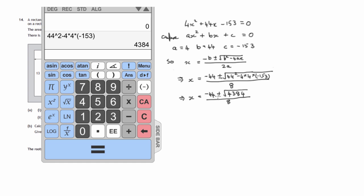Now, there are two possible values that come from this formula, because there's a plus or minus tucked in there. So, x is either negative 44 plus the square root of 4384 divided by 8, or, x is equal to negative 44 minus the square root of 4384 over 8.